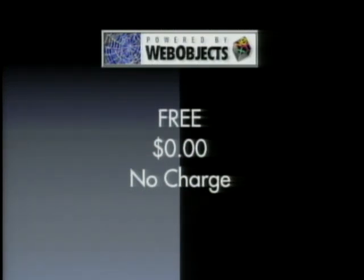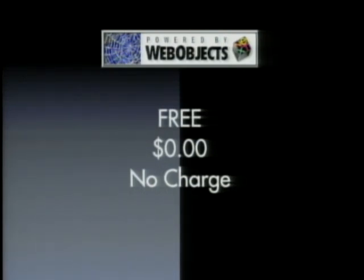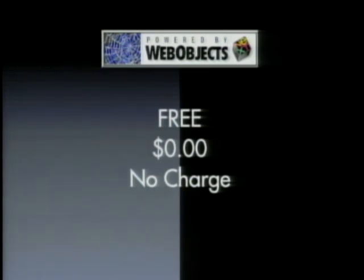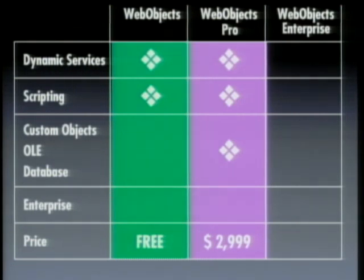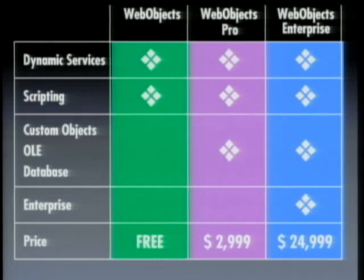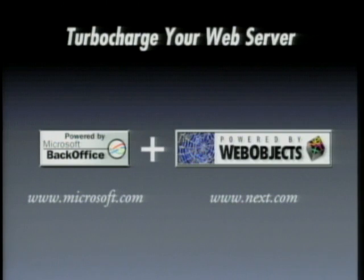You can download a free beta version off our website today, and the final products are done at the end of this quarter. You can also download that Dodge virtual showroom demo as a starting point. We've had the code up for approximately five weeks and have downloaded over 12,000 copies — over half of them for NT. We've decided to give away the base level version. We think this is so important that everybody ought to have it on their web server so you can have a dynamic site. We encourage everyone who gets a Microsoft Internet server to zip over to the Next site and pick up your free version of WebObjects.